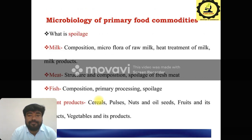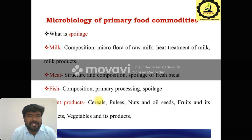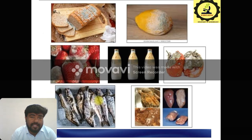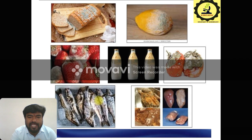Then microbiology of primary food commodities — especially what is the spoilage? Milk is a composition of the microflora of raw milk, and heat treatment of milk and milk products. Then meat — the structure and composition and spoilage of fresh meat. Then fish — also the composition, primary processing and spoilage. Some other products: cereals, pulses, nuts and oils are also the microbiology of primary food commodities. These pictures show different foods infected by microorganisms — bread, fruits, milk products, meat and meat products — all having microorganisms involved in spoilage.